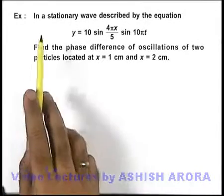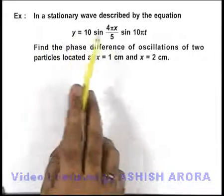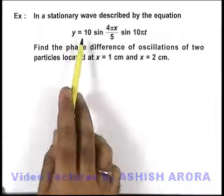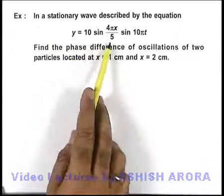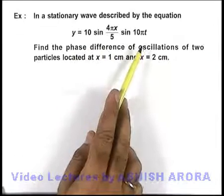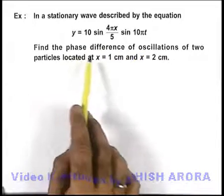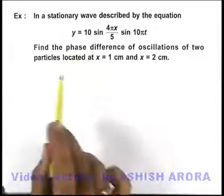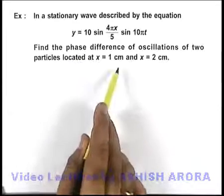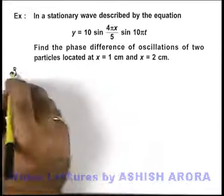In this example we are given that in a stationary wave described by the equation y = 10 sin(4πx/5) sin(10πt), we are required to find the phase difference of oscillations of two particles located at x = 1 centimeter and x = 2 centimeter.